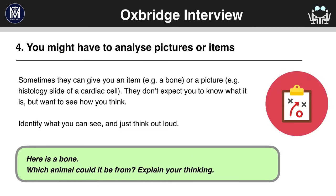Four: you might have to analyse pictures or items. At times they can give you an item — for example, a bone or a picture like a histology slide — and then they'll ask you to talk about it. Of course, when they give you a random bone from any animal, they don't expect you to know much about it. Again, they're looking at what you can see and what you can spot using logical thinking. Think out loud.